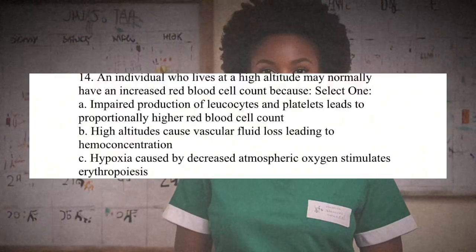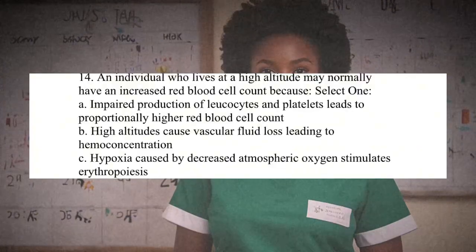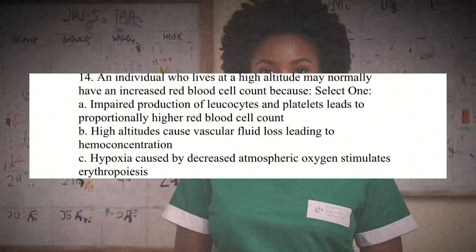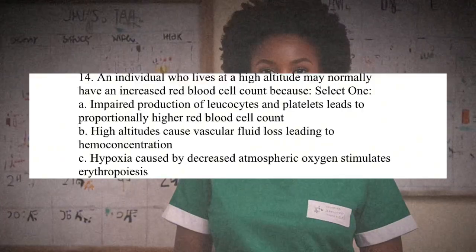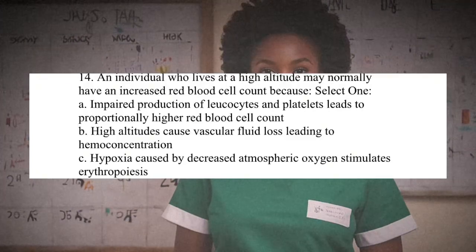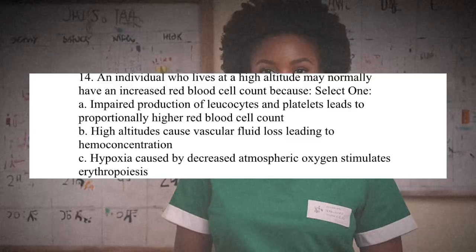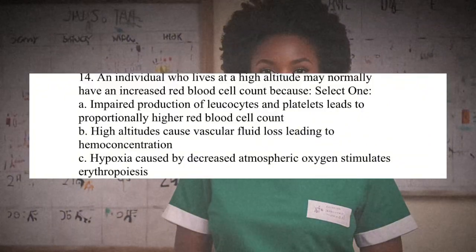Question 14: An individual who lives at a high altitude may normally have an increased red blood cell count because: A. Impaired production of leukocytes and platelets leads to proportionally higher red blood cell count. B. High altitudes cause vascular fluid loss leading to hemoconcentration. C. Hypoxia caused by decreased atmospheric oxygen stimulates erythropoiesis. The correct answer is C. At high altitudes, lower atmospheric oxygen levels lead to hypoxia, which stimulates the production of erythropoietin by the kidneys. This hormone promotes the production of red blood cells in the bone marrow to enhance the oxygen-carrying capacity of the blood.